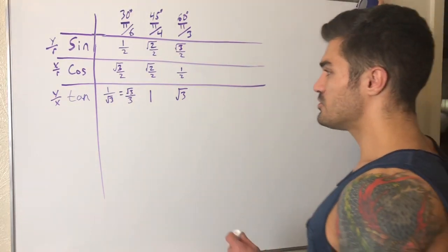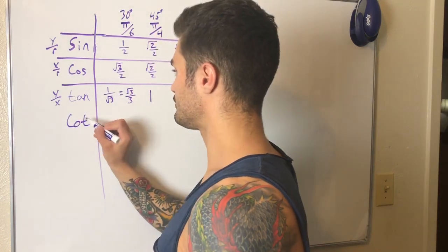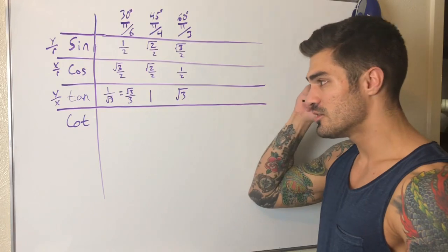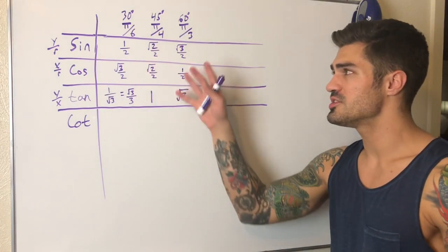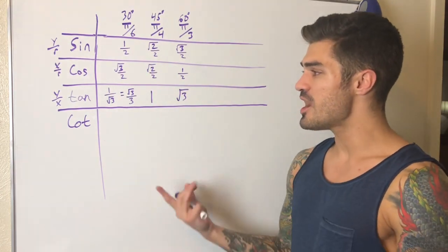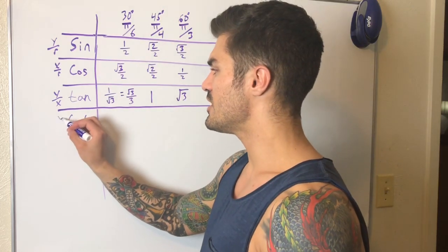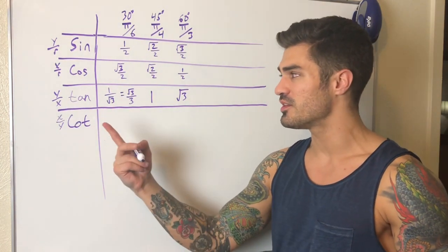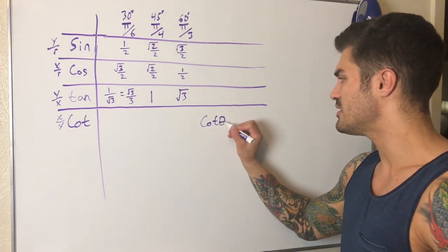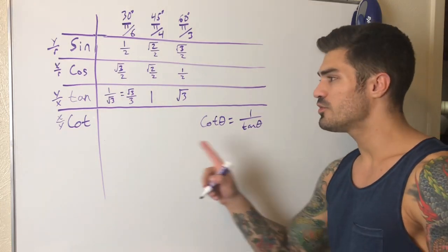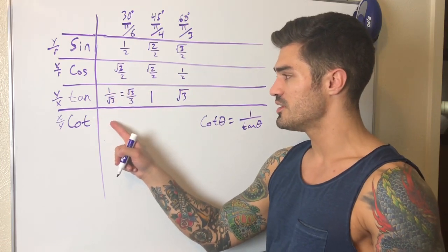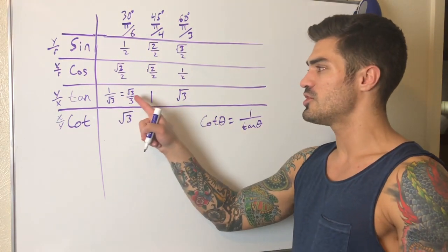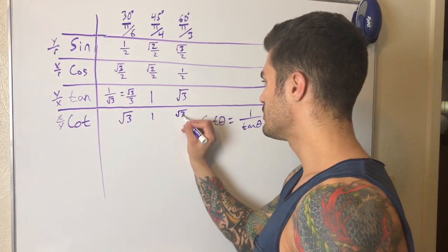Now for cotangent — same idea. All we've memorized so far is sine and cosine: 1, 2, 3, 3, 2, 1. We built tangent using identities. Cotangent can be found using the definition x/y, or by taking the reciprocal of tangent, since cot θ = 1/tan θ. The reciprocal of 1/√3 is √3; the reciprocal of 1 is 1; the reciprocal of √3 is 1/√3, which rationalizes to √3/3.